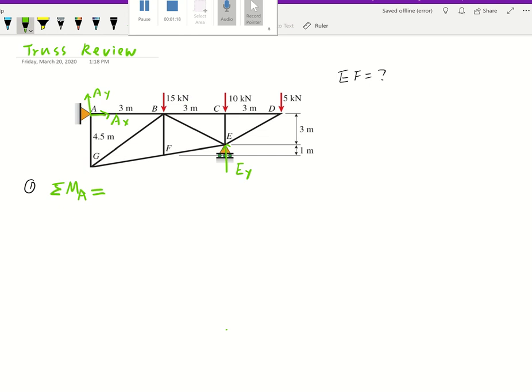Let's take a look. For this 15 kilonewton applied at B, the moment arm is 3, it's clockwise so it's negative. For clockwise negative, the 5 kilonewton will be triple 3 for moment arm and negative since it's clockwise. For EY, the moment arm will be 3 plus 3, that's 6, and it's counterclockwise so that would be positive. That equals 0.